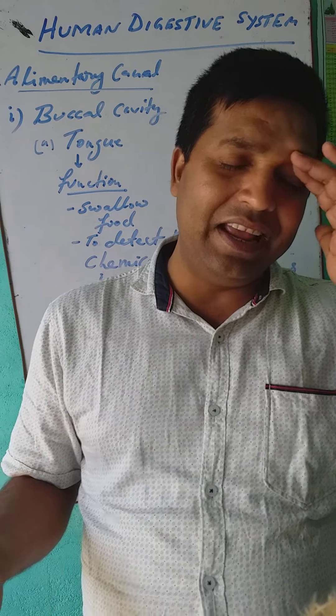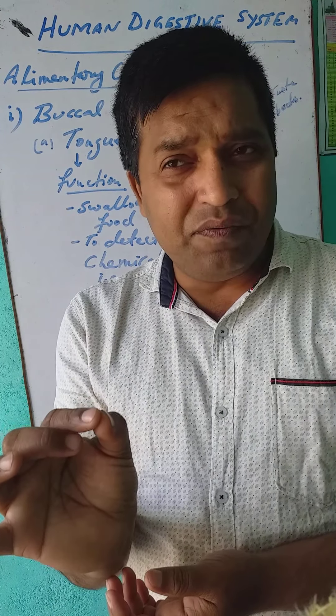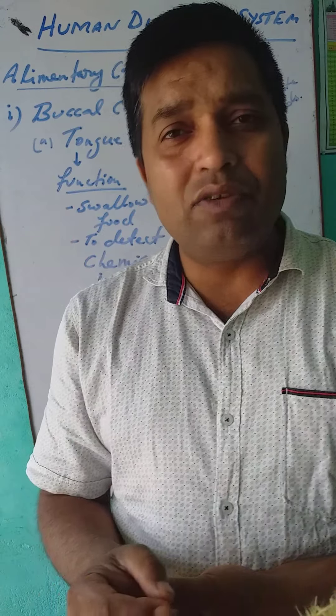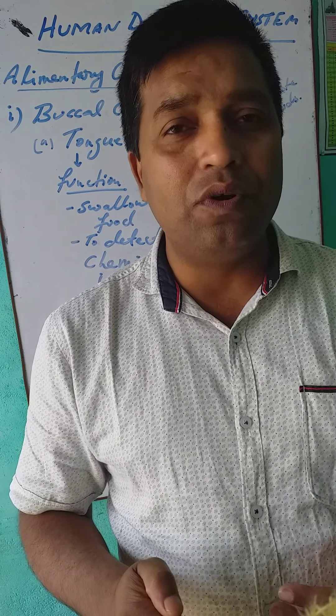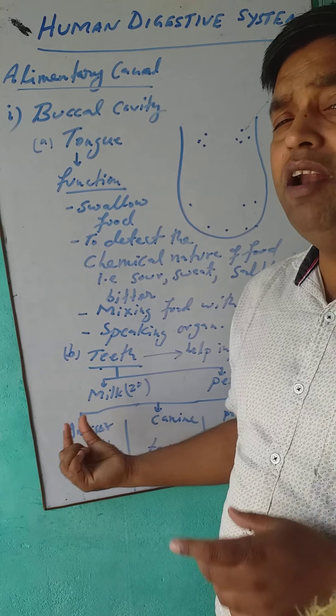Teeth are also very important. The hardest known substance in our body is the teeth. Teeth are made up of a chemical substance called enamel, which is the hardest known substance present in our teeth. When a child is born, from birth to about five years of age, the child has only 20 teeth. These 20 teeth are called milk teeth.